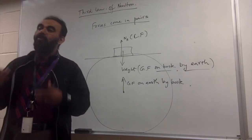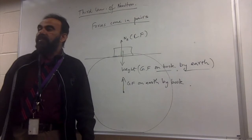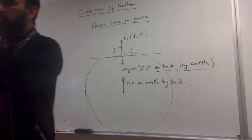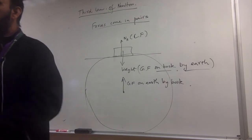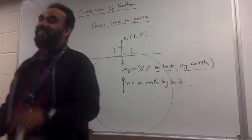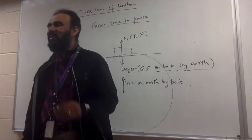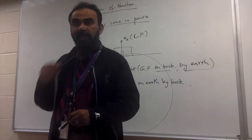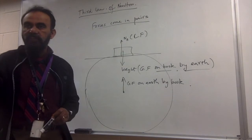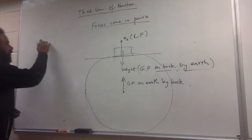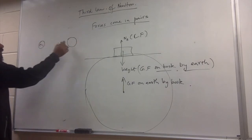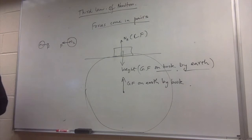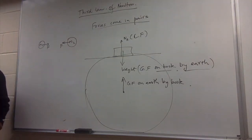Now, gravity is the force between any two masses. Gravitational forces are always attractions. The gravitational force between two masses m1 and m2 is equal for both objects regardless of their masses — the force on each is exactly the same. So if Mike Tyson punches me in the face, my face applies the same force back on his hand.